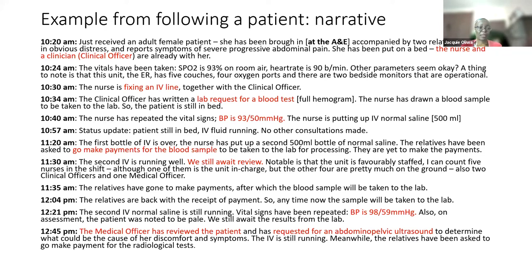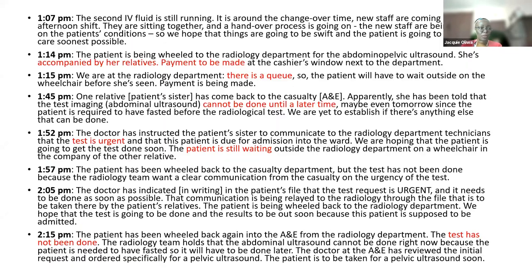At this point they also noted that the patient was pale and they were waiting for results from the lab. The patient had arrived at 10:20. Around 12:45, a medical officer — likely senior to the clinical officer — reviewed the patient and decided they needed an ultrasound of the abdomen and pelvis to determine why she could be in pain and distress. Fluids were still running. The relatives were told they needed to go pay for the radiological tests. The patient was wheeled to the radiology department — it was now around 1:14 — accompanied by her relatives, who had to go through the same payment cycle again.